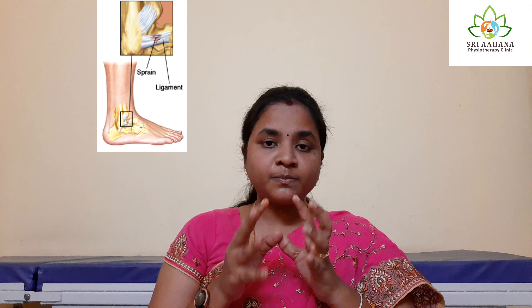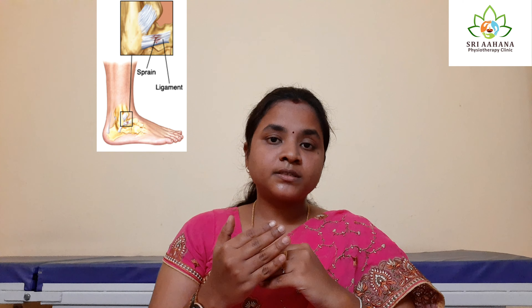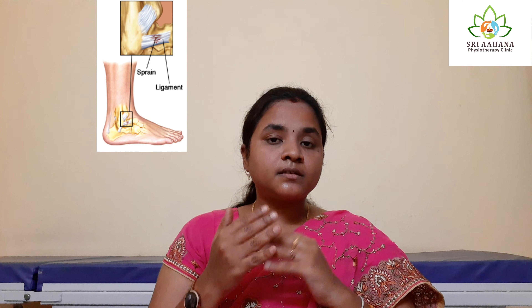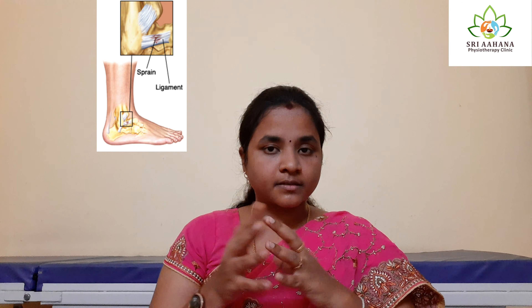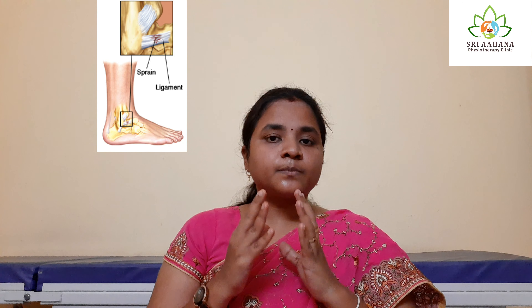Now let me tell you what is strain and what is sprain. Strain is something that happens when a muscle or a tendon is overstretched or overexerted. And sprain is something that happens when a ligament is overstretched or overexerted.